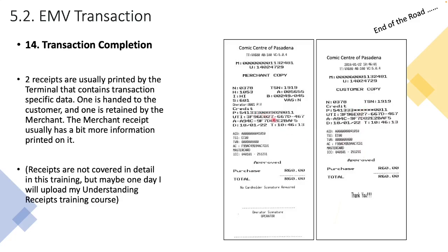Note that from a PCI DSS perspective the PIN should be masked on receipts. On the merchant copy you tend to have more EMV data than on the customer copy — things like AC information, ICC data, TSI — though this varies. Some customer receipts omit much of this EMV data. It will vary from bank to bank, from terminal to terminal, and from region to region.